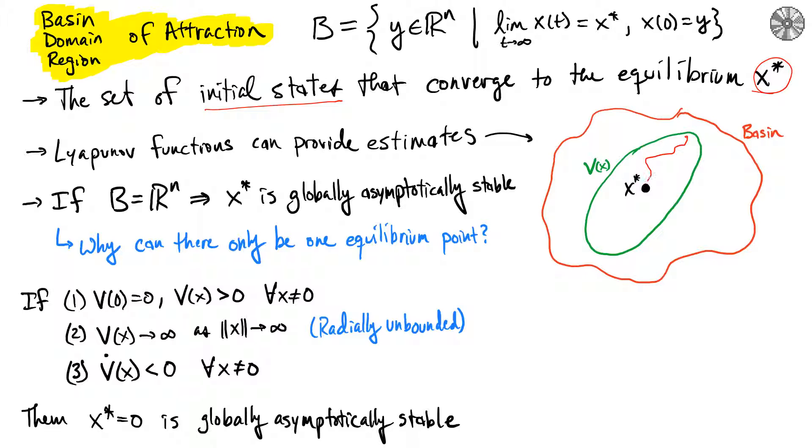sense of Lyapunov means that it eventually goes to this equilibrium. So if that's true, then you can use this level set of V(x) as a proxy for the basin of attraction. One of